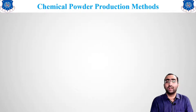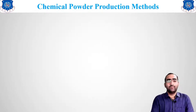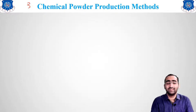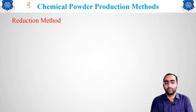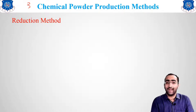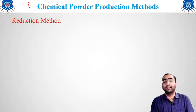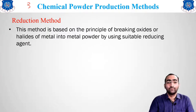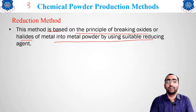Now we move to the third category — chemical powder production methods. The first method is the reduction method. Reduction means removal of oxygen or adding hydrogen. By adding hydrogen, you get a hydride, and hydrides are always brittle in nature. You then heat and disintegrate the material to get powder. This method is based on the principle of breaking oxides or halides of metal into metal powder using a suitable reducing agent.